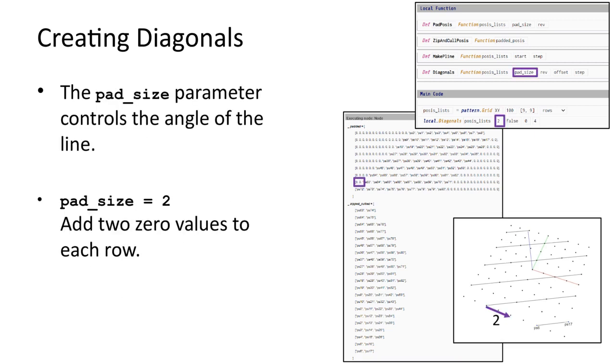Note that the pad_size parameter controls the angle of the line. A higher pad size means a smaller angle. Note that polylines are only generated through every fourth list.